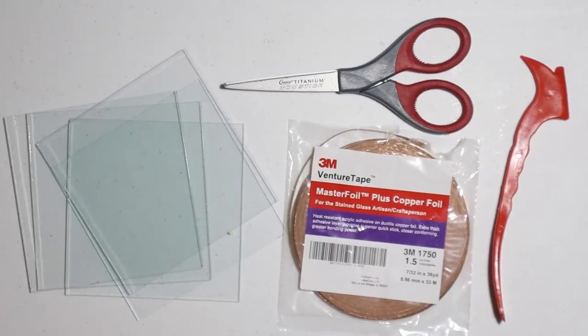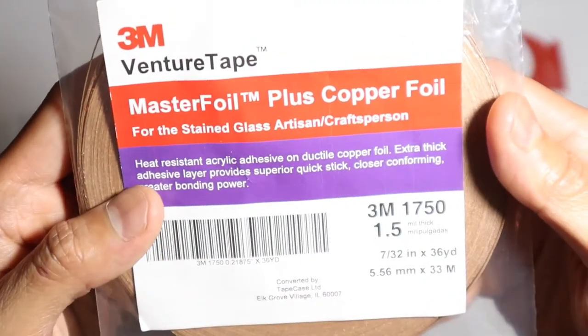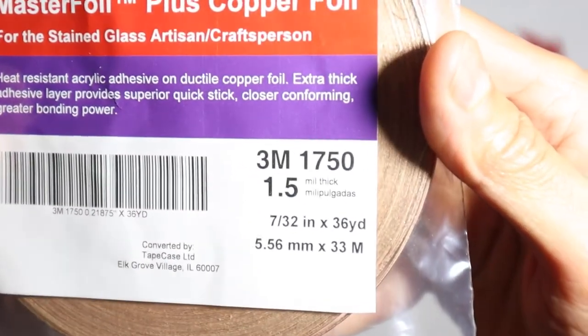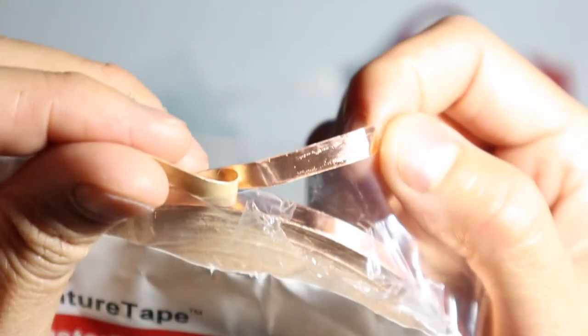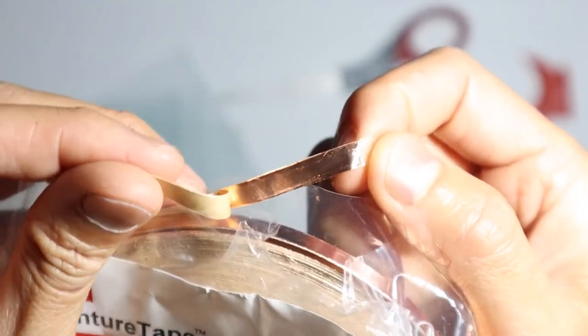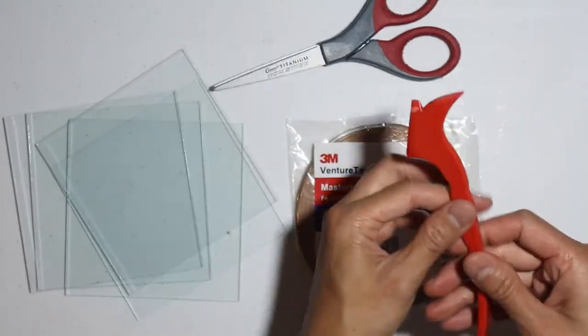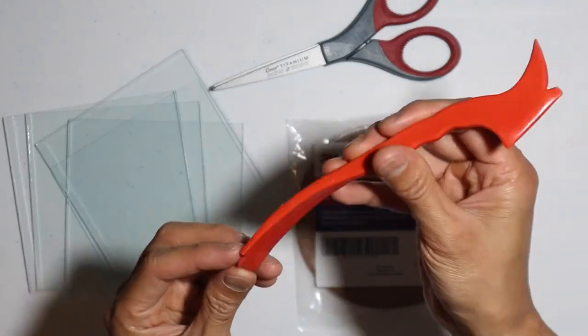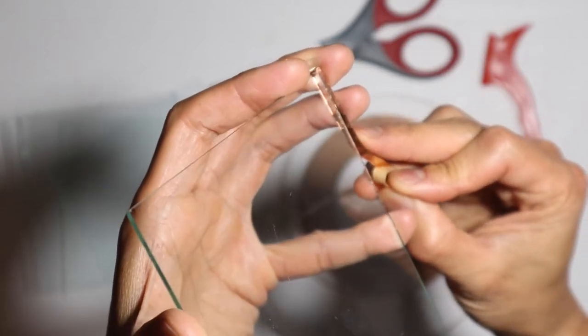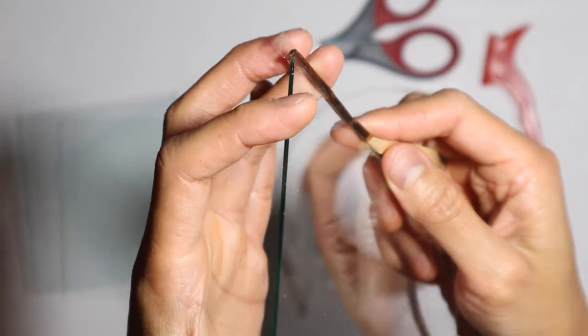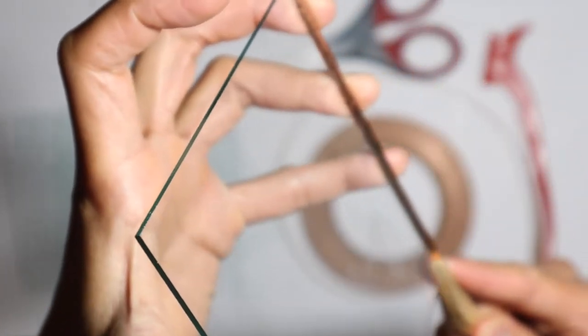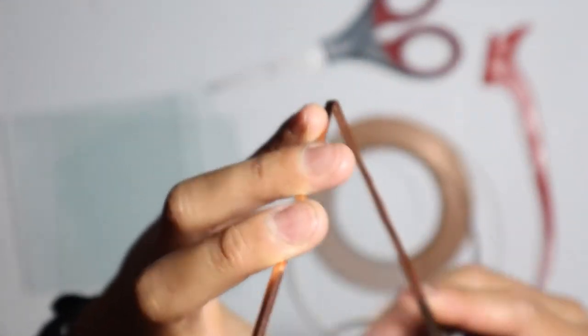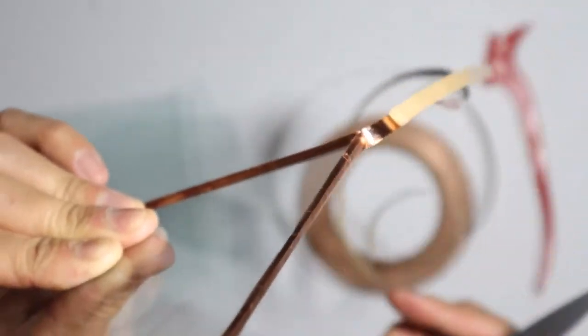Alright so we are ready for the copper foiling. So the first thing we need is copper foil tape in the 7/32nd of an inch width. As you can see this is the copper backed copper foil. And you just need scissors to cut. And we have our fid tool that we'll use to press and burnish everything onto the glass. So we'll just take the tape and line it up to the edge of the glass making it even on both sides.